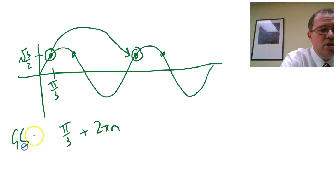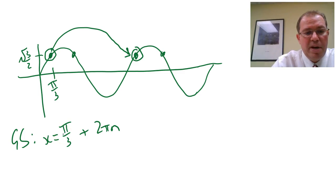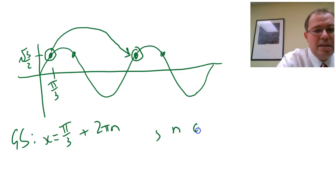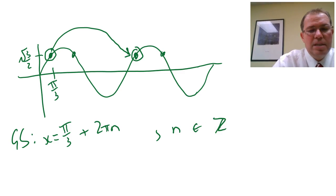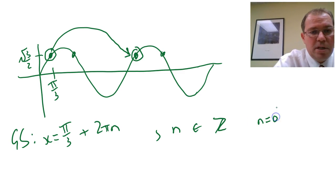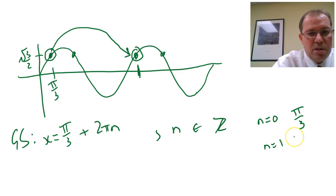So the general solution would be x equals π over 3 plus 2πn, where n is your counting integer (0, plus or minus 1, plus or minus 2). You can see if I put n equals 0 into that formula it gives us that principal value of π over 3. Putting n equals 1 gives us the answer here, which would be 2π plus π over 3, and that would be 7π over 3.